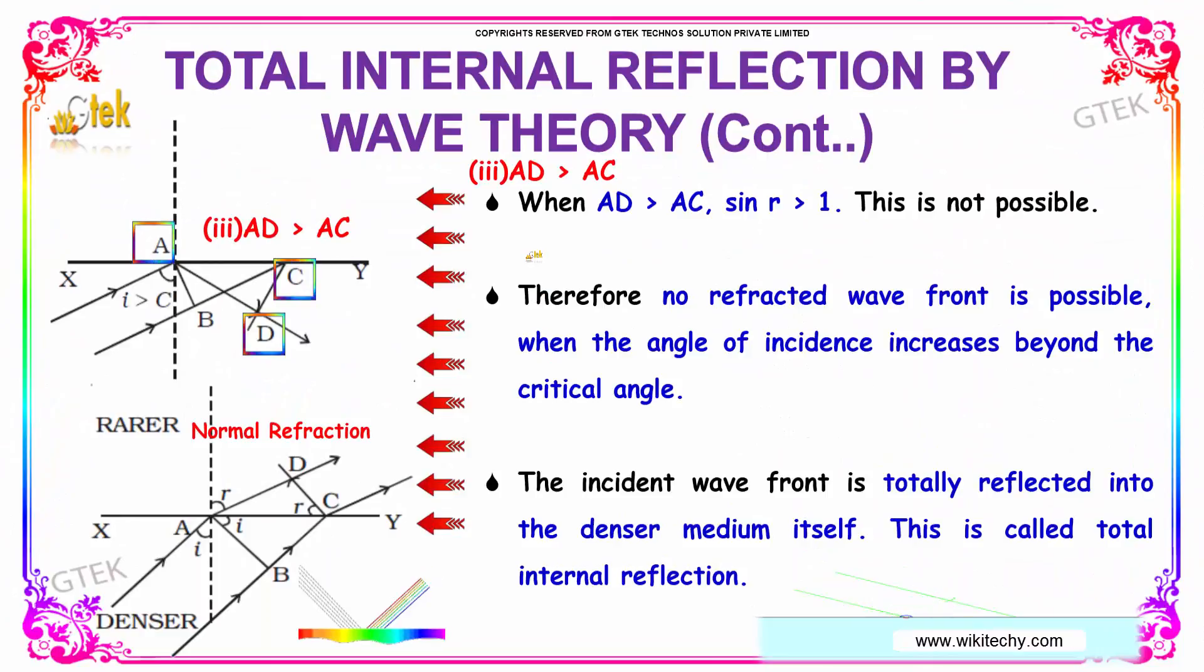Over here, if AD is greater than AC, in this condition when AD is greater than AC, sine r is greater than 1 which is not possible.